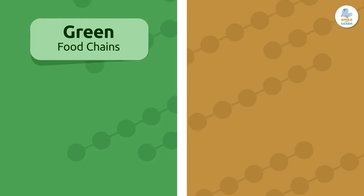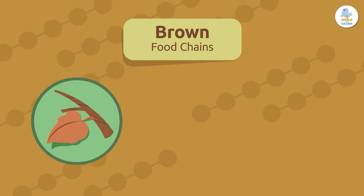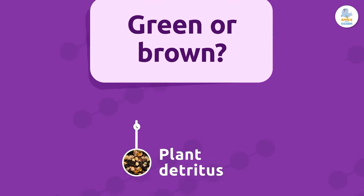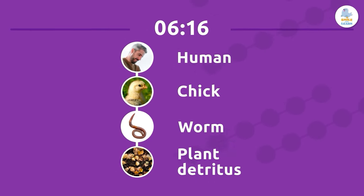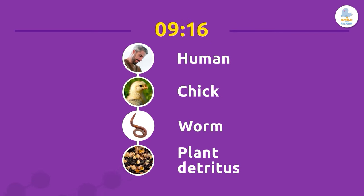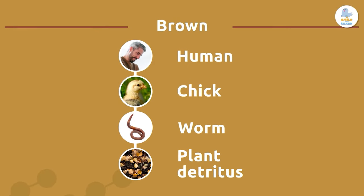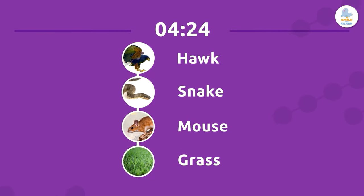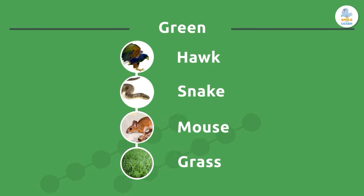Remember: green food chains start with living plants, and brown food chains start with dead stuff, such as plant remains, animal remains, or even poop. Let's try a quick quiz. Green or brown? Brown — because it starts with plant remains, dead stuff. On to the next one: green or brown? Green — because it starts with grass, which is a producer that is alive.